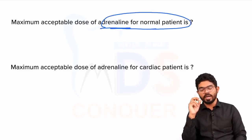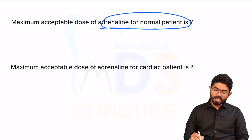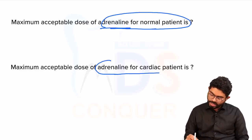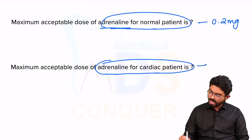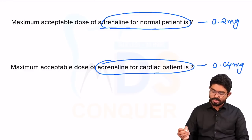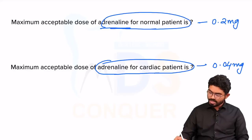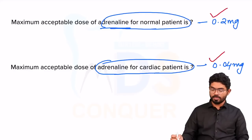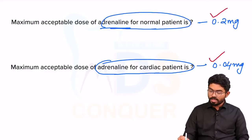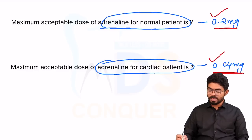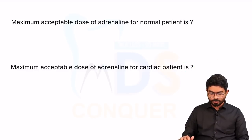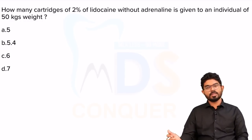Next: maximum acceptable dose of adrenaline. For a normal patient it is 0.2 milligrams. For a cardiac patient it is 0.04 milligrams. These are commonly asked direct single-liner questions — 0.2 mg for normal patients and 0.04 mg for cardiac patients. This is the maximum you can give to the particular patient.